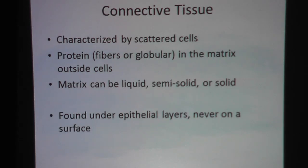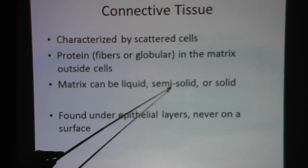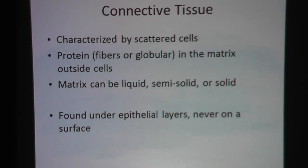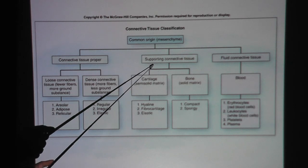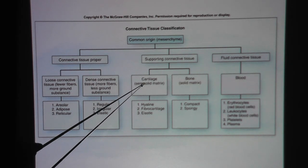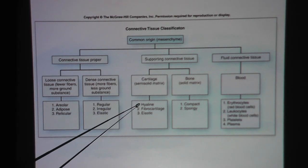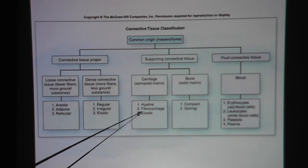Connective tissue is characterized by scattered cells — in this case, because it's cartilage, they will be chondrocytes. Outside the cells we will see matrix that is semi-solid, and of course connective tissue is never found on the surface. Remember, cartilage is under the heading of supporting connective tissue and there are three types. We already talked about fibrocartilage and elastic cartilage. Here we're talking about hyaline cartilage.